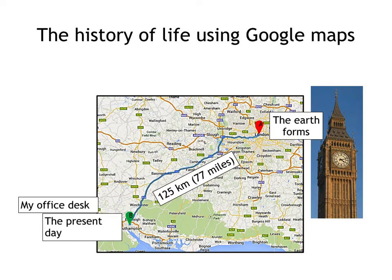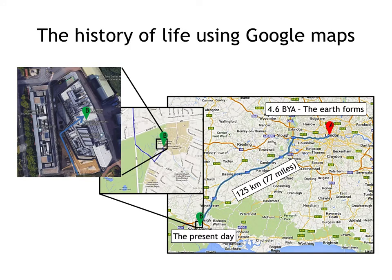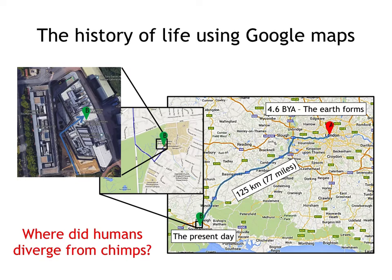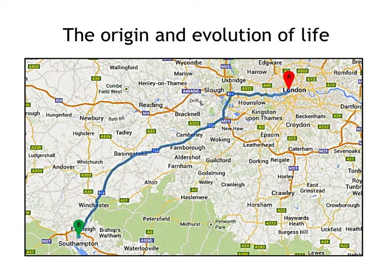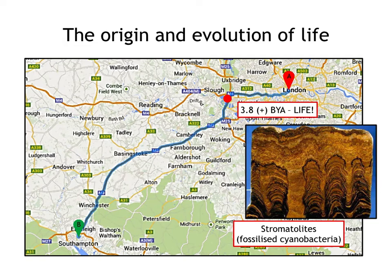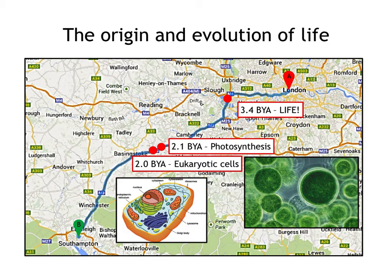We're going to travel from Big Ben in the centre of London all the way to my office desk in the present day. At 3.8 billion years ago, when we arrive in Slough, we find our first fossils of cyanobacteria — the oldest fossil record of life on this planet. Coming along the M3, south of Camberley almost to Basingstoke, we get photosynthesis, which changed the atmosphere from toxic gases to the 21% oxygen we know today, making the evolution of eukaryotic cells possible in Basingstoke.